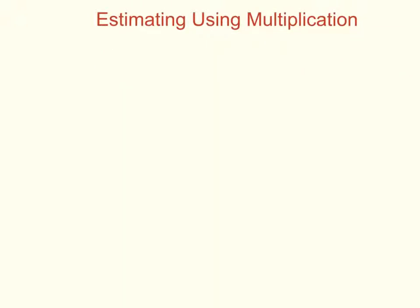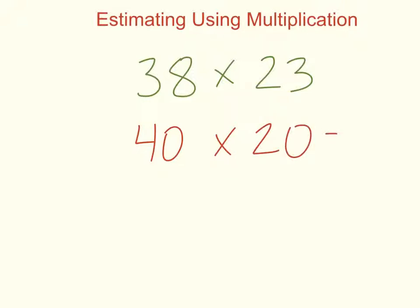Now, let's say that you had a question like this: 38 times 23. Well, the 38 I'm going to change to 40, and the 23 I'm going to round to 20. Now, is this an overestimate, underestimate, or is it hard to tell?